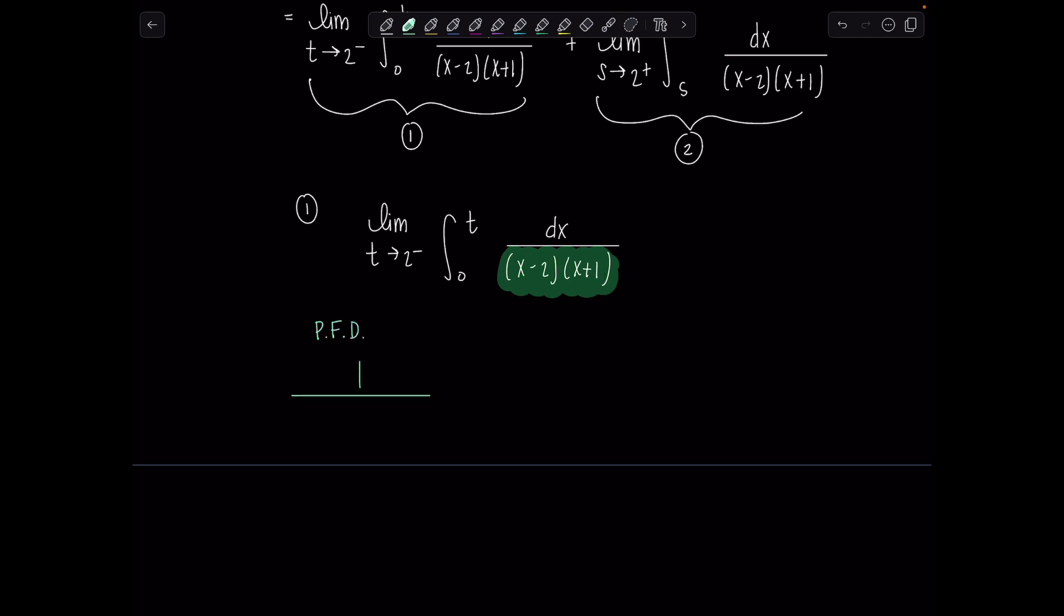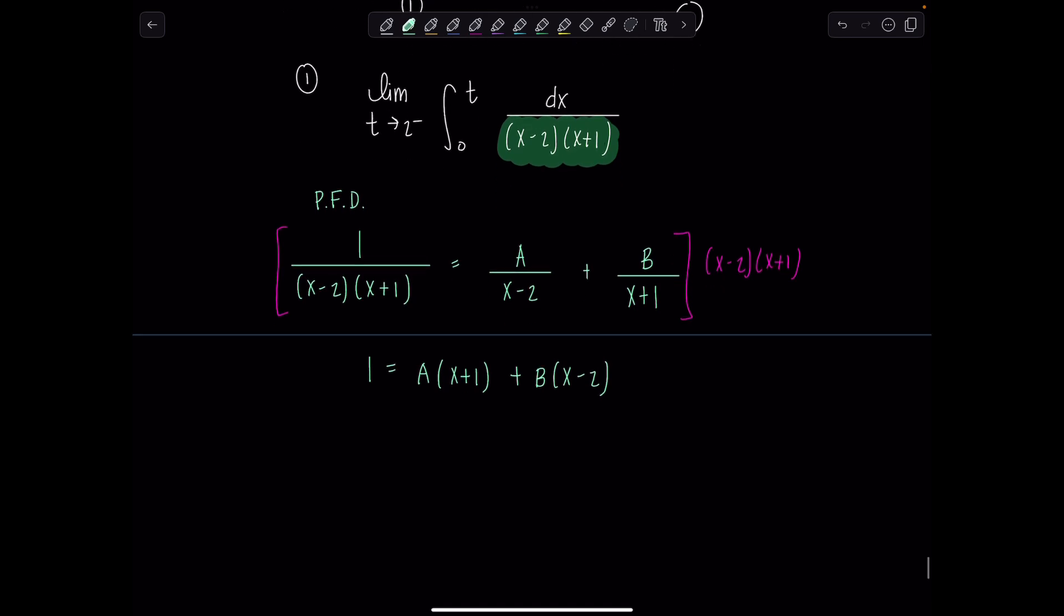so we have 1 over x minus 2, x plus 1. Both of the factors in the denominator are linear, they're not repeated, so the decomposition is just going to have the form A over x minus 2 plus B over x plus 1. And then multiply by the LCD, which is x minus 2, x plus 1. And then we'll have 1 equals A times x plus 1 plus B times x minus 2. And then solve using your favorite technique. I'm just going to go ahead and substitute in values for x.